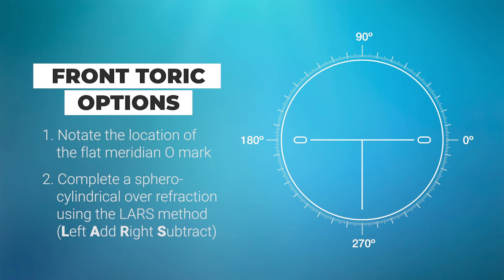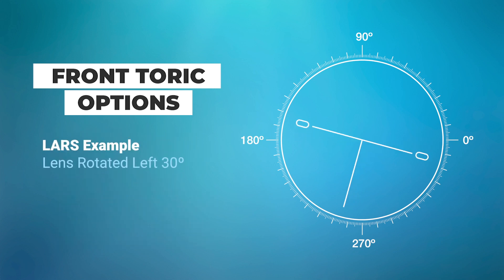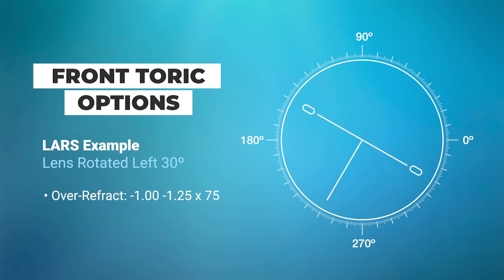Next, complete a sphero-cylindrical over-refraction and calculate the new axis by compensating for the lens rotation using the LARS method — Left Add, Right Subtract. For example, if the lens is rotated left 30 degrees, add 30 to the axis of the cylinder. With an over-refraction of -1.00 -1.25 at 75, you would add 30 to the axis of 75, thus ordering a final power of -1.00 -1.25 at 105, so that when the lens rotates 30 degrees left, the cylinder will align with the desired axis of 75.